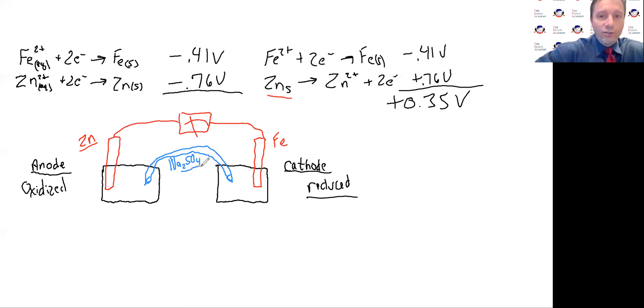So now over on this side here, I am going to have inside of this container zinc sulfate liquid. And I'm going to have over here my iron sulfate. So when I place these two electrodes in there, we're going to get a current start to happen. So what is happening exactly?